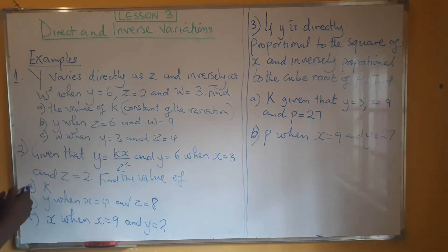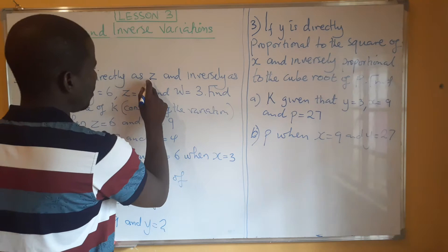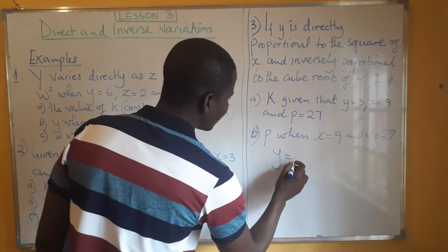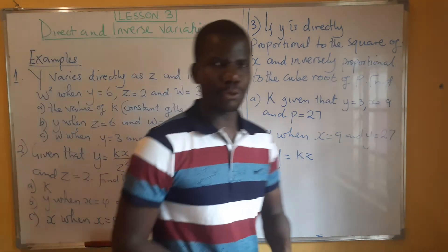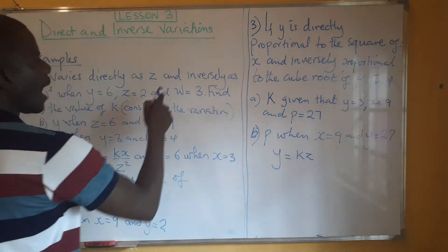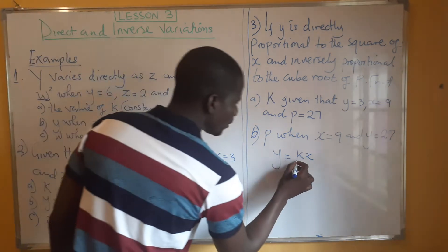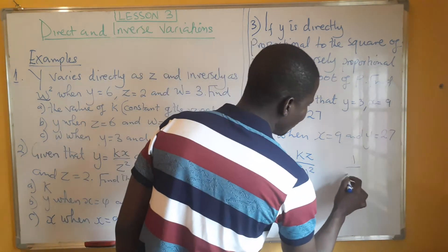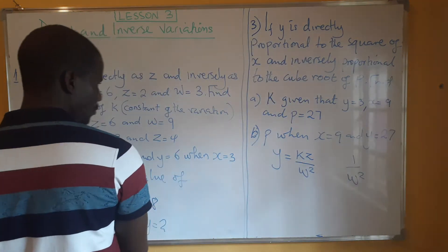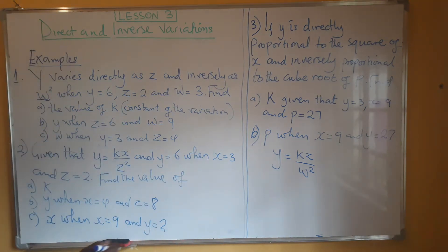Let's look at the first question. Y varies directly as Z, so I'm going to write KZ — that is what we write for direct variation. Then, inversely as W squared — this inversely part will come as 1 over W squared. So the equation is going to be written as Y equals KZ over W squared. This is how we are going to write the equation.